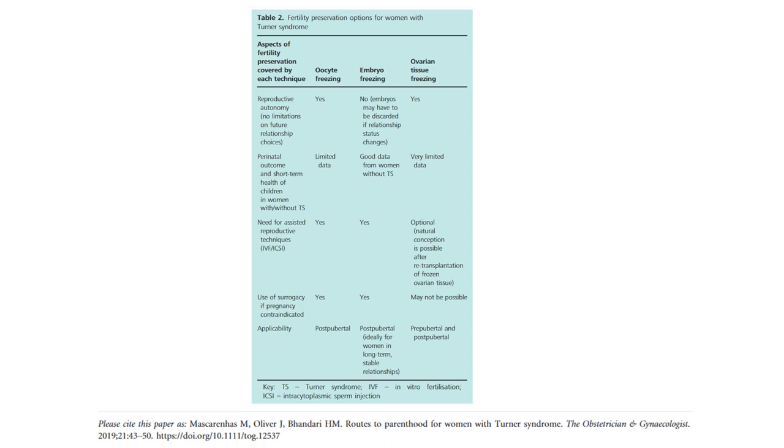Need for assisted reproductive techniques like IVF and ICSI. Oocyte freezing yes, embryo freezing yes, ovarian tissue freezing is possible after re-transplantation of frozen ovarian tissue. Use of surrogacy if pregnancy is contraindicated. Oocyte freezing yes, embryo freezing yes, ovarian tissue freezing may not be possible. Applicability, so oocyte freezing is post-pubertal, embryo freezing is post-pubertal as well, ovarian tissue is also pre-pubertal and post-pubertal.